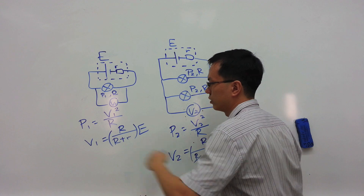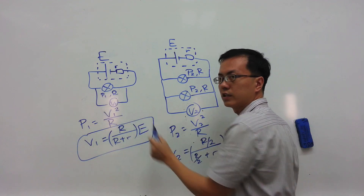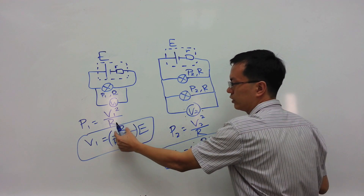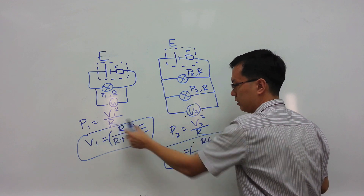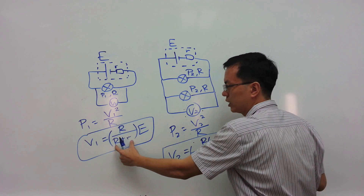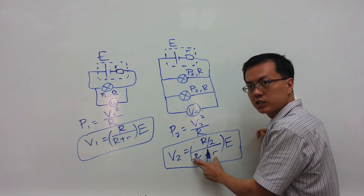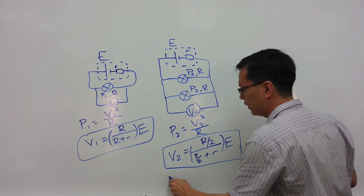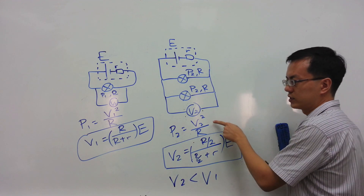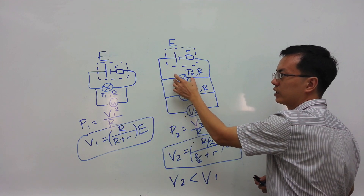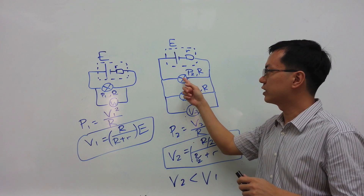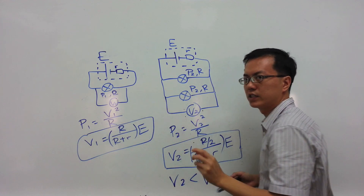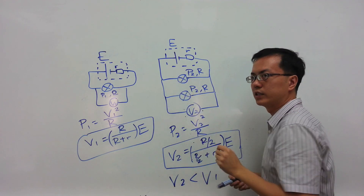If you compare the equation for V1 with the equation for V2, you'll notice that if the numerator of the fraction decreases by half, the denominator is not exactly divided by half — it is reduced by a smaller amount than the numerator. This means the fraction for V2 is smaller than the fraction for V1. Therefore, V2 will be smaller than V1, and because V2 is smaller than V1, the power dissipated within each parallel light bulb is less than the power dissipated within the single light bulb. Each of these light bulbs will be dimmer than the single light bulb. The sum of the power dissipated within the two light bulbs will be greater than that within the single light bulb, but each individual bulb will be dimmer.